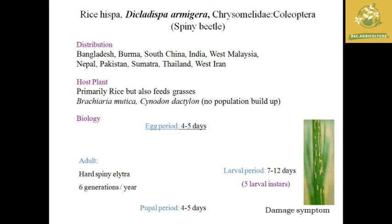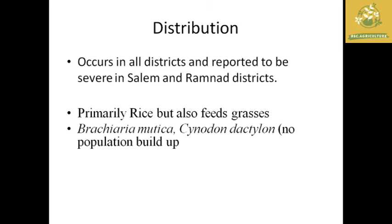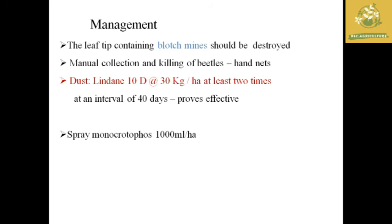Management of rice hispa: leaf tips containing blotch mines need to be destroyed; manual collection and killing of beetles using hand nets is effective; chemical spraying with monocrotophos; or dusting lindane at 30 kg per hectare, at least two times with an interval of 40 days.